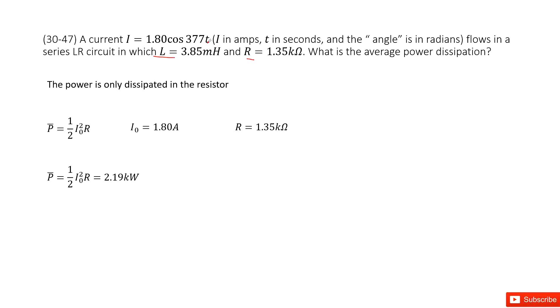As we learned in this chapter, we know the power is only dissipated in the resistor. And the function for the average power for the resistor is 1/2 I₀²R.